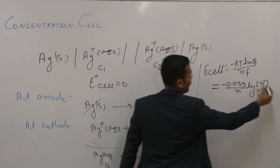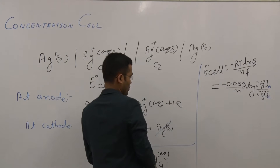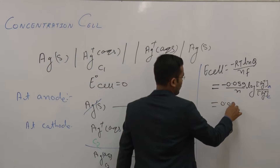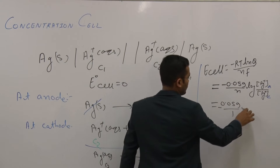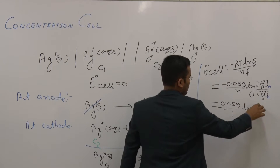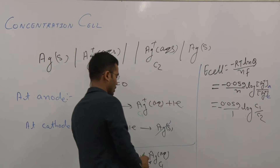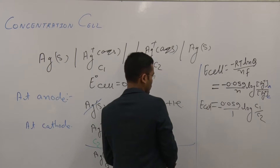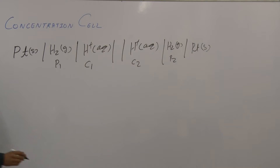Since C1 is for the anode and C2 is for the cathode, with n = 1, the E_cell = 0.059/1 − log(C1/C2). This is the E_cell expression for the Ag⁺ concentration cell.